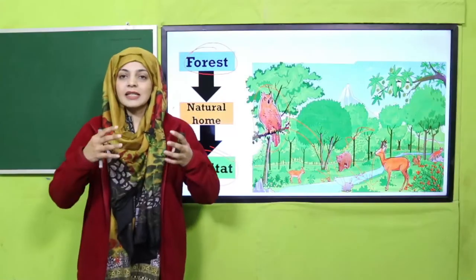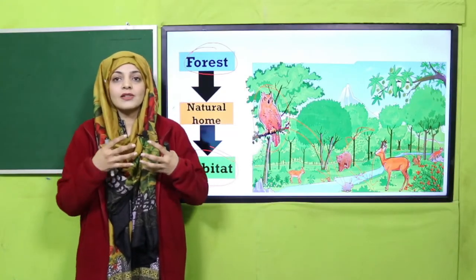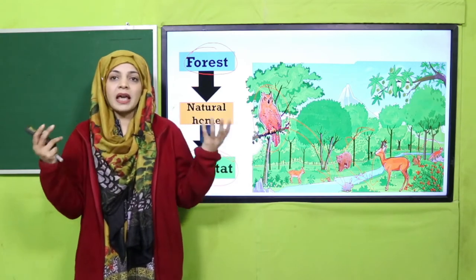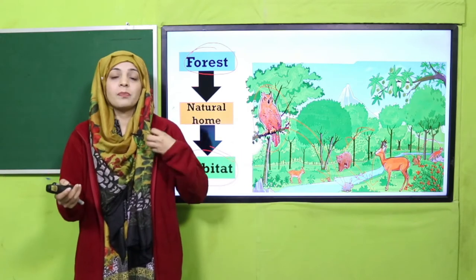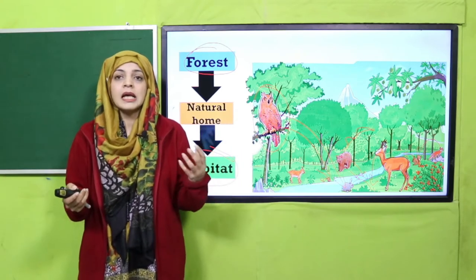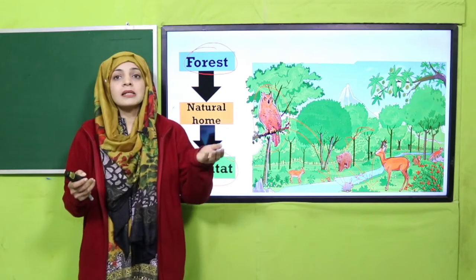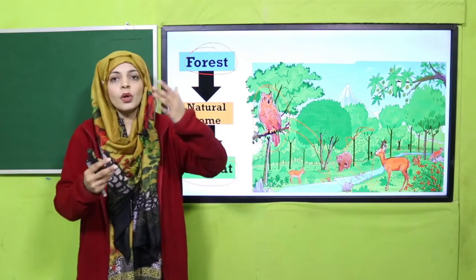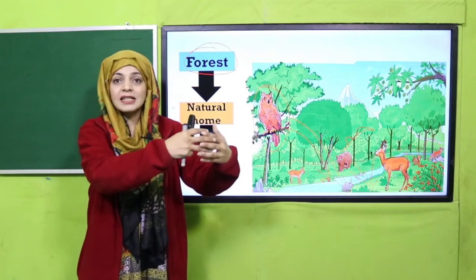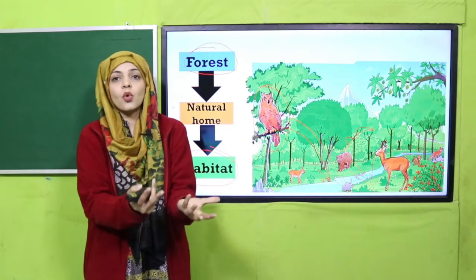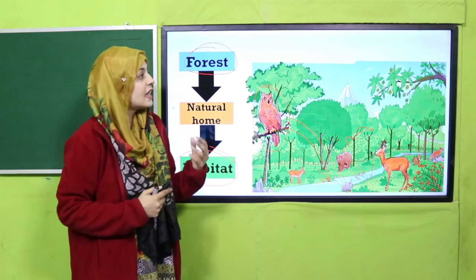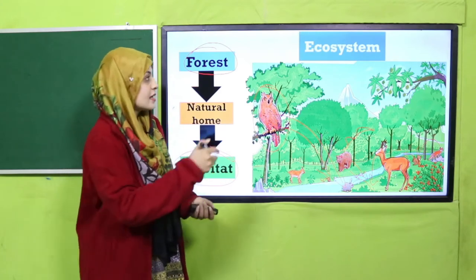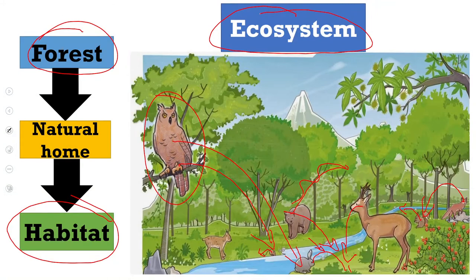There is interaction between non-living and living things. The air that plants produce makes clean air for the animals. Plants also provide homes for different animals. Similarly, one animal is the food of another animal. They all are interconnected and provide something to each other. This type of interaction of living things with their habitat is called an ecosystem.